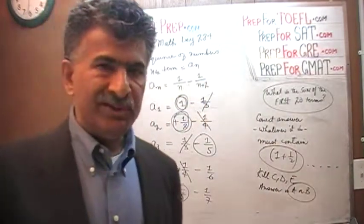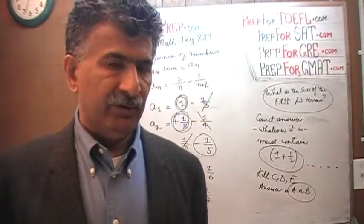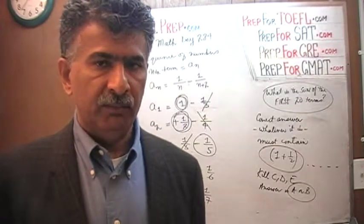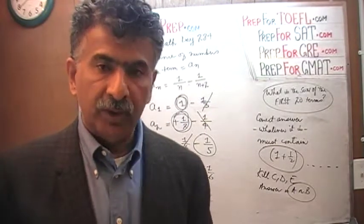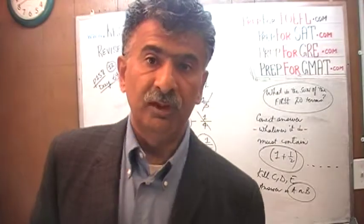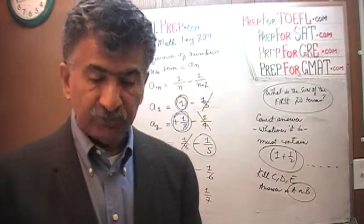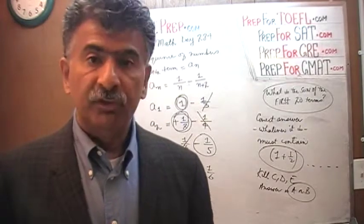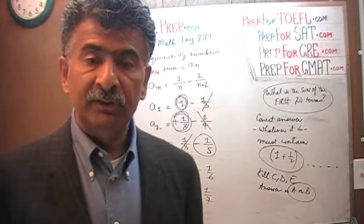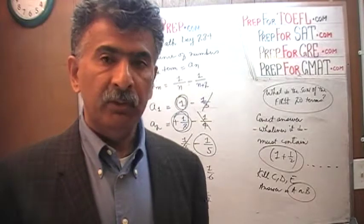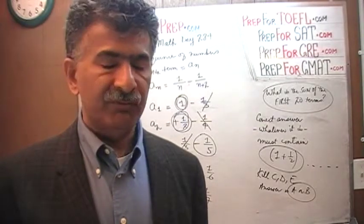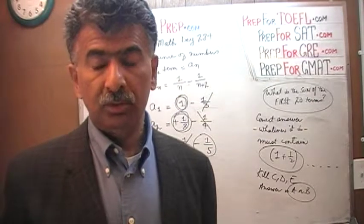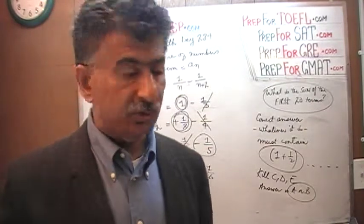Now, had this been the real exam and you found this taking too long, or you didn't know what to do, or you just weren't motivated — at this point you've narrowed it to 50-50. You say to yourself the technical term, which is 'to heck with it,' flip a coin, pick one, and move on. 50-50 odds is a very good position on a hard question.